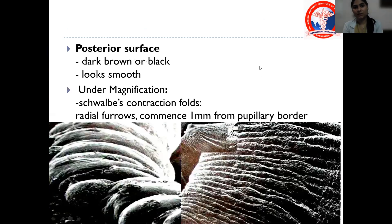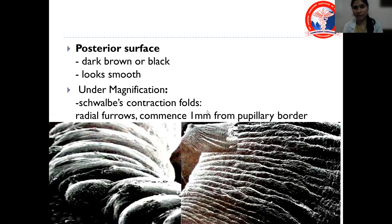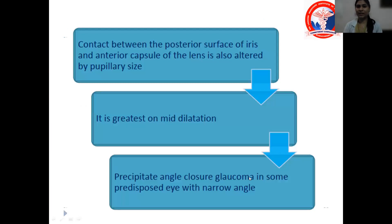The posterior surface is dark brown or black in color and comparatively smoother than the anterior surface. Under magnification, Schwalbe's contraction folds are present, along with radial furrows which commence at 1 mm from the pupillary border. The contact between the posterior surface of the iris and the anterior capsule of the lens is greatest in mid-dilation, and can precipitate angle closure glaucoma in some predisposed eyes with a narrow angle.